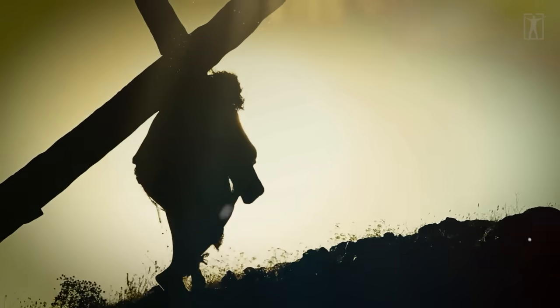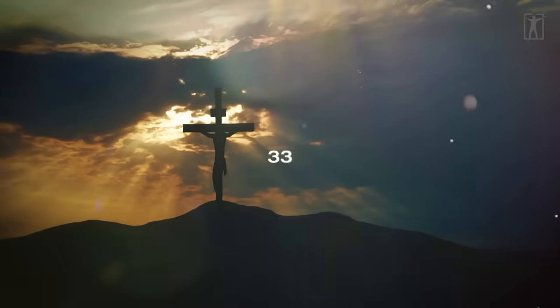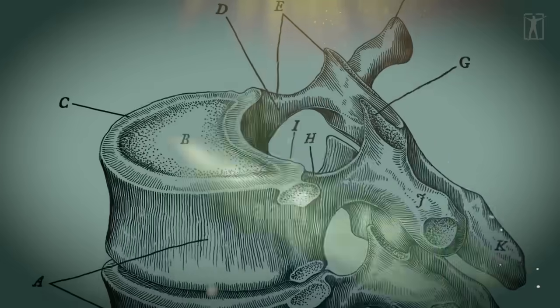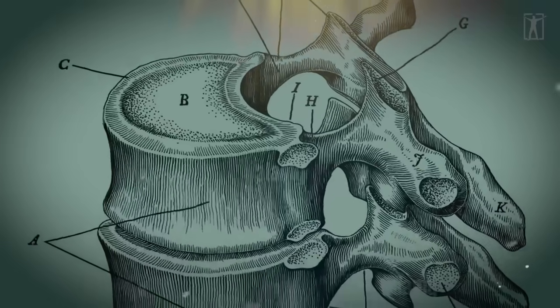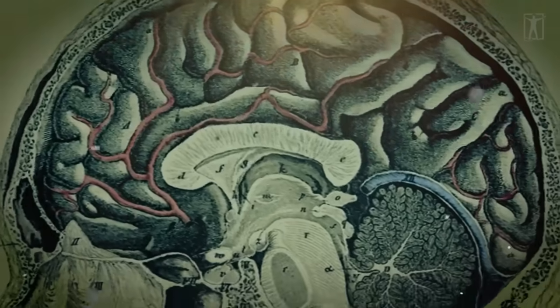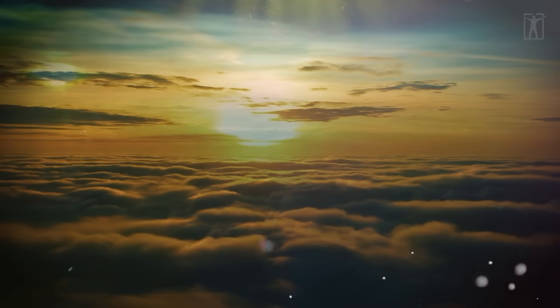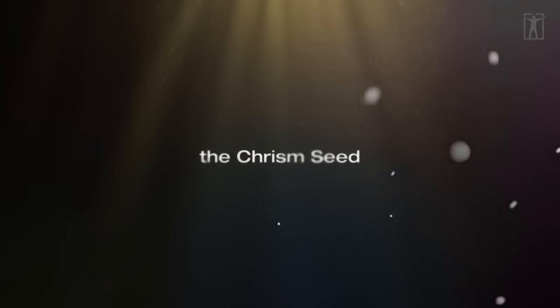This is why Jesus was crucified at the age of 33. Atop the 33 vertebrae is a cross, a junction point of two nerves that leads to the pineal and pituitary glands in heaven, that heaved up place where heaven awaits the prodigal son's return, the chrism seed.